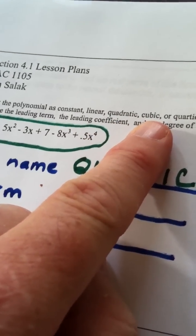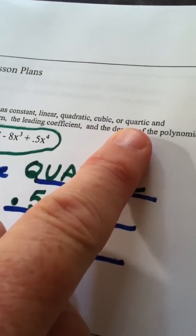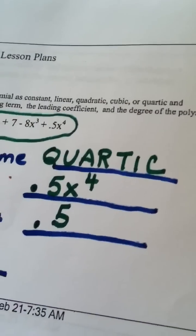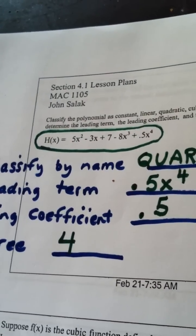Cubic is degree 3. Quartic is degree 4. And anything beyond degree 4 is just called a higher order polynomial. And we are done.